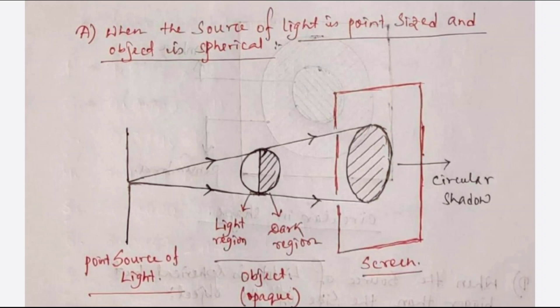Students, you can see the diagrams in a previous video — I have already explained and discussed these diagrams. When the source of light is point-sized, how it will form the shadow has already been discussed. This is one very important diagram.